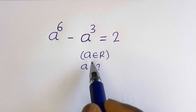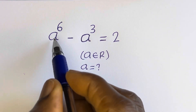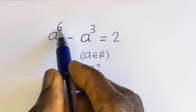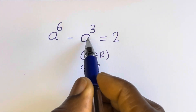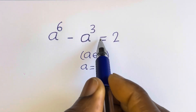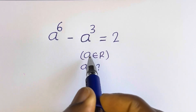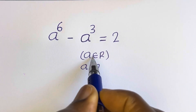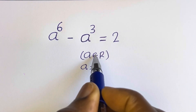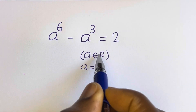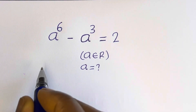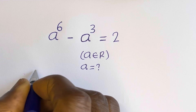Hello. How to solve for a in this equation: a to the power of 6 minus a to the power of 3 is equal to 2, where a is a member of the real numbers.